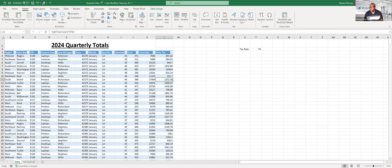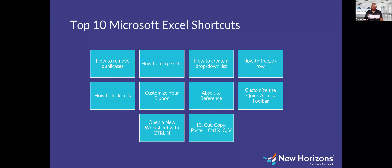So these are the different tools that will help make your Excel life easier: removing duplicates, merging, locking, drop-down lists, freezing rows, customizing the ribbon, absolute referencing, and common shortcuts like Ctrl+N, C, X, V, and using Ctrl with your arrow keys to navigate continuous ranges. It's been a pleasure sharing with you. I'll turn it back over to Mariela for questions.